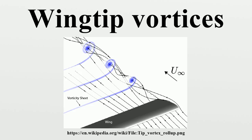The result is a region of downwash behind the aircraft between the two vortices. The two wing-tip vortices do not merge because they are circulating in opposite directions. They dissipate slowly and linger in the atmosphere long after the airplane has passed, and are a hazard to other aircraft known as wake turbulence.